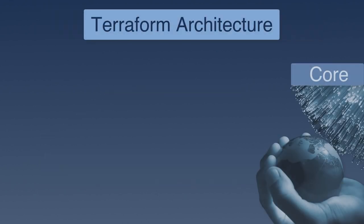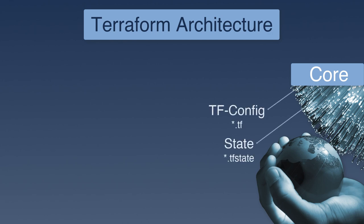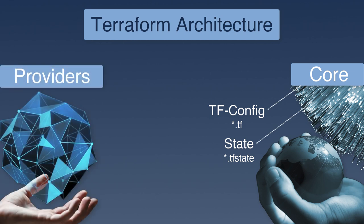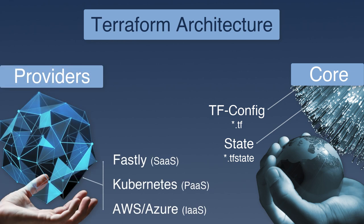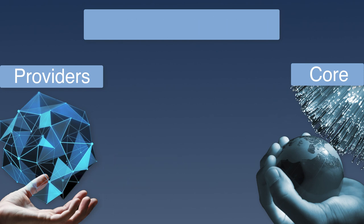The Terraform architecture consists of a core with two input sources: tf-config, which defines what needs to be created or provisioned, and state, which reflects the current state of the setup. Vendors and the Terraform community both maintain providers, which are the API interaction points with your infrastructure. Providers for specific technologies include AWS, Azure, Kubernetes, and Fastly.